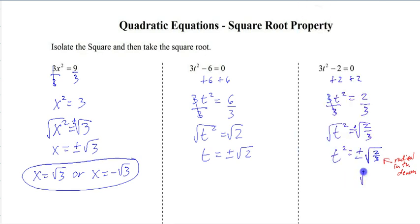So we have square root of 2 over square root of 3, and we need to rationalize, which gives us radical 6 over 3. And now we can write t equals plus radical 6 over 3, or t equals negative radical 6 over 3.